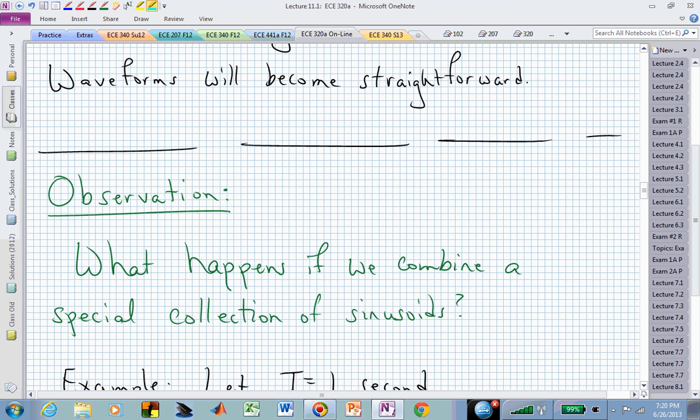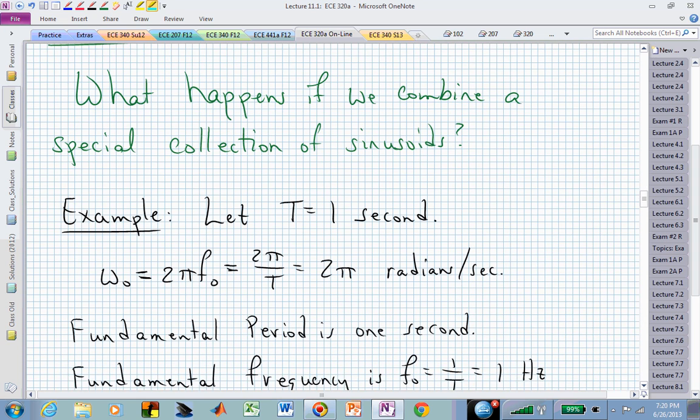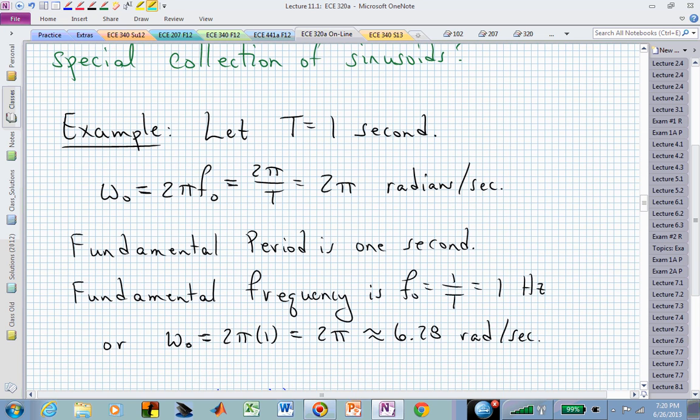Let's just look at trying to get a feel for what that is in terms of what happens when we do combine sinusoids in a special way. Suppose we say, let the period of a periodic waveform be one second. Then that gives us a frequency omega-naught and a frequency f-naught. The fundamental period is one second. The fundamental frequency is the reciprocal of that, or one cycle per second, or one hertz, or in radian frequency it's 2π times f-naught, or 6.28 radians per second.